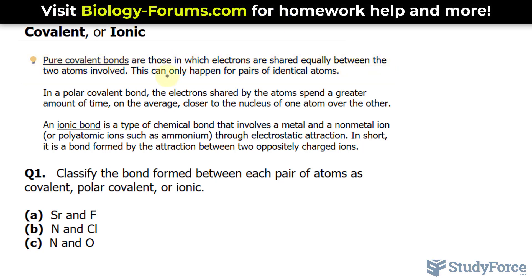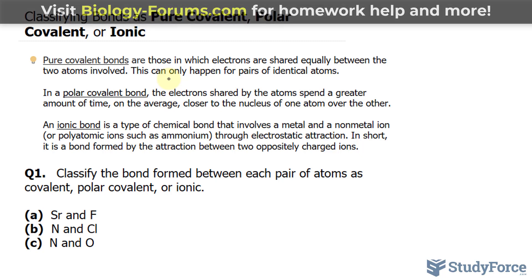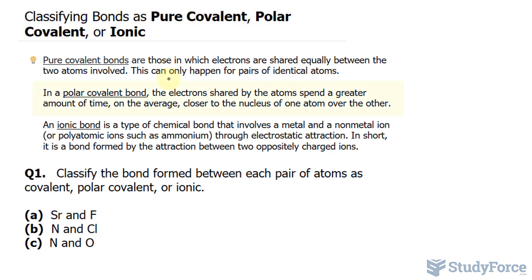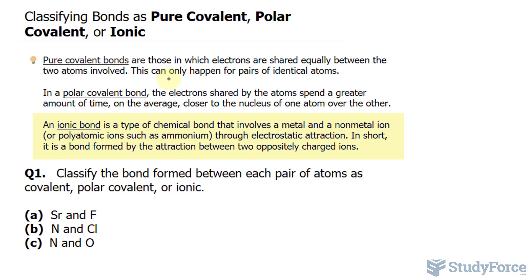We'll look at a case shortly where that's not the case. In a polar covalent bond, the electrons shared by the atoms spend a greater amount of time, on average, closer to the nucleus of one atom over the other. And finally, an ionic bond is a type of chemical bond that involves a metal and a nonmetal ion, such as a polyatomic ion, through electrostatic attractions.